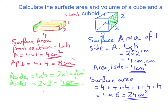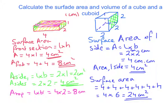Now we calculate the area of the top and the bottom. The area of the top equals length times breadth: 4 centimetres long multiplied by 2 centimetres wide, which gives 8 centimetres squared. We have 2 of these — top and bottom — so the area of both is 8 times 2 equals 16 centimetres squared.